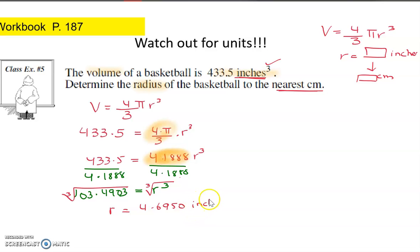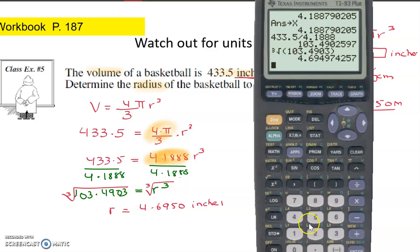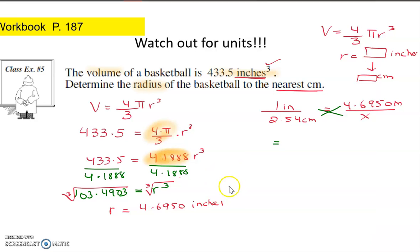This is in inches, but I would like to change this into centimeters. So you can create your proportion. 1 inch is 2.54 centimeters, and I have 4.6950 inches. How many centimeters would that be? So I cross-multiply. Any method you like, simple multiplication, if that makes sense to you. You want to do unit analysis, if that makes sense to you. You're more than welcome to use that. So I'm going to take that 4.6950 times by 2.54, and it gives me 11.9253.